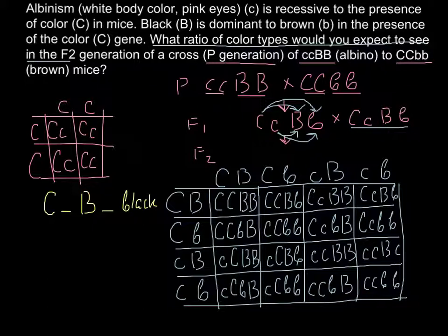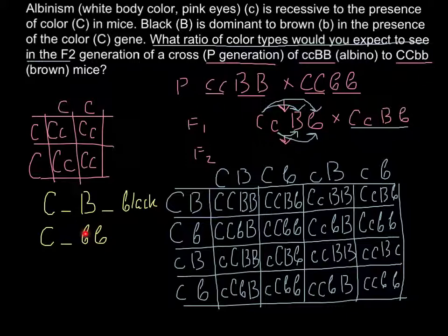The second phenotype: capital C (blank) small b small b — in the presence of color with no capital B for black, we have homozygous recessive for the black locus, and that means this phenotype is brown.